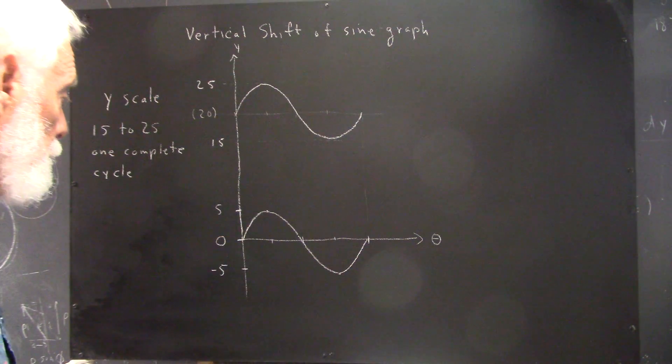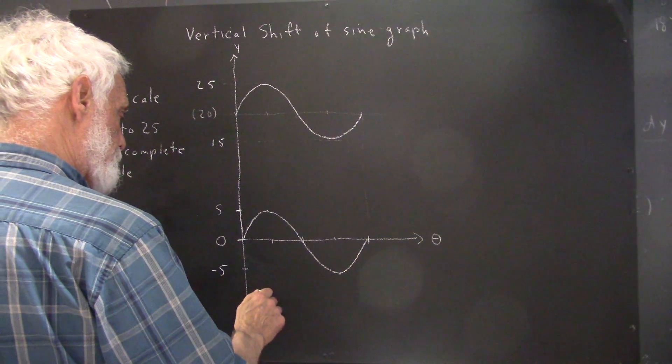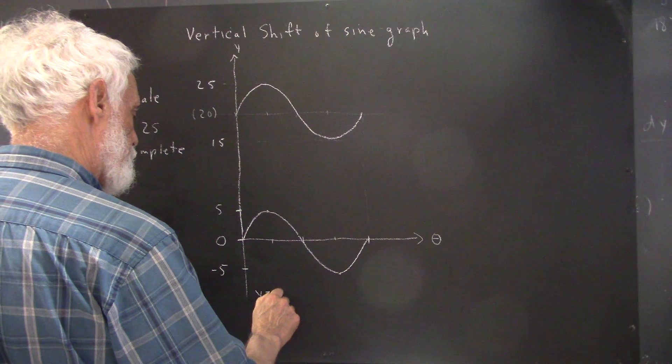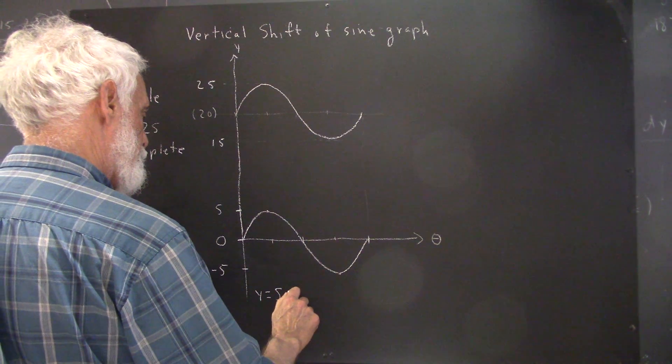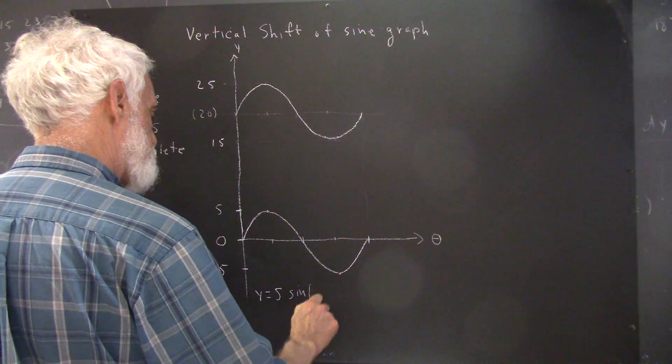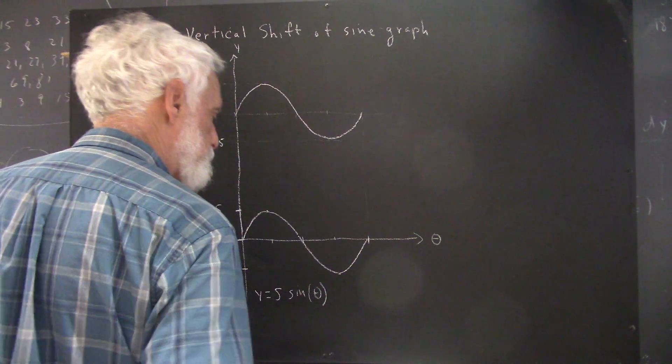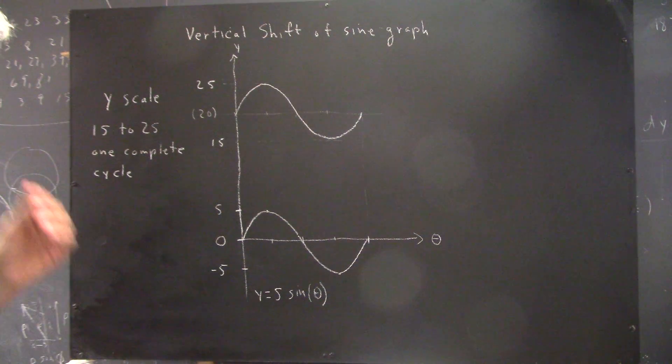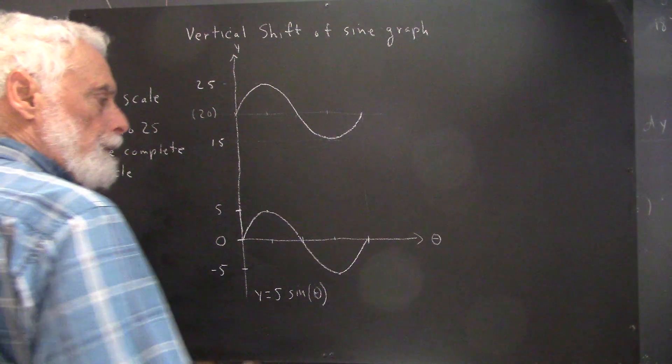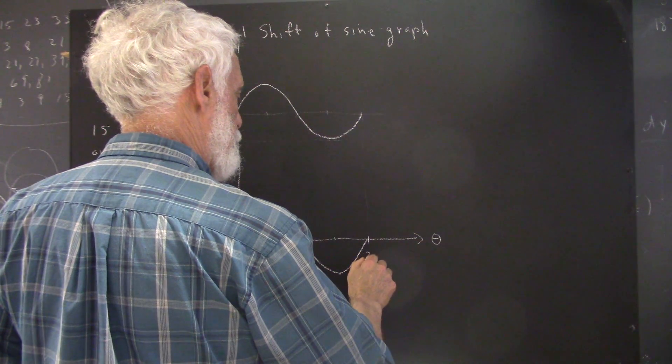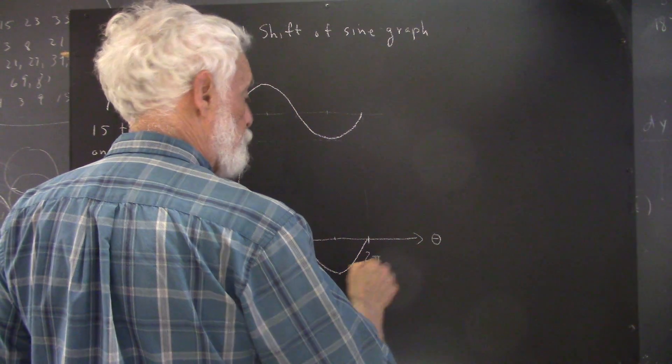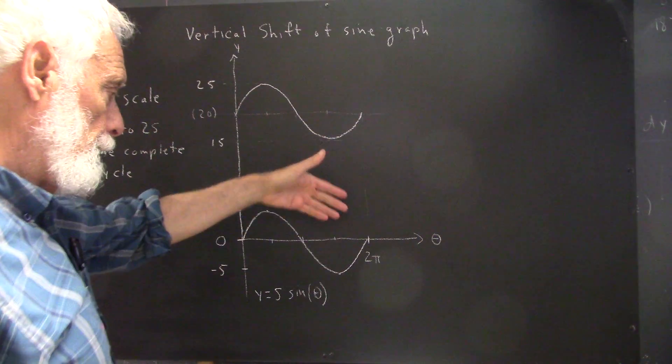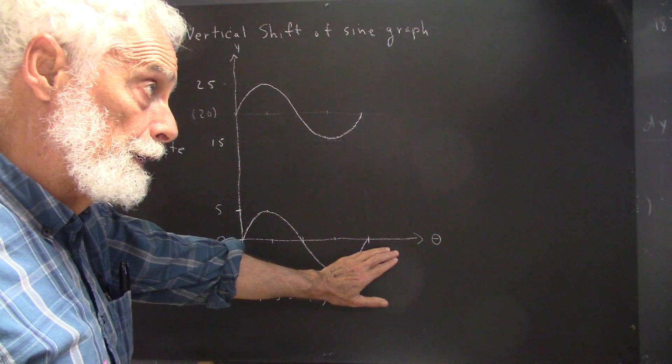So this graph is the graph of what? Well, from what we've seen before, you see that this graph is a graph of y equals five sine theta. And implicitly, if theta is our phase, then we've got two pi here. Now, we don't actually have to have two pi here. We can leave this unlabeled.